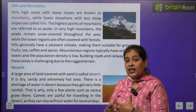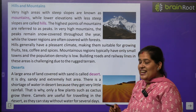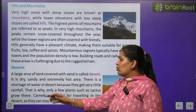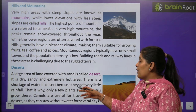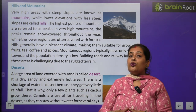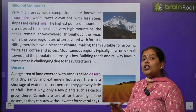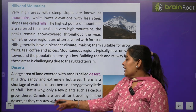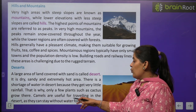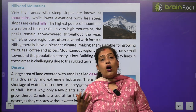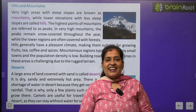Now we will learn about desert. Registan — jahan bahut garmi hoti hai aur charon taraf reth hi reth hoti hai. A large area of land covered with sand is called desert. It is very dry and sandy, bahut zyada garam hota hai, aur yahan par paani ki bahut kami hoti hai kyunki bahut kam matra mein baarish hoti hai. This is why only a few plants like cactus grow here. Camels are very useful for travelling in the desert, as they can survive without water for many days — isliye camel ko ship of the desert bhi kaha jaata hai.